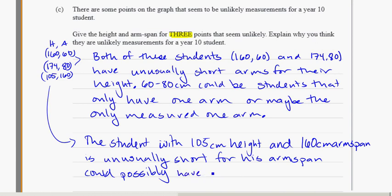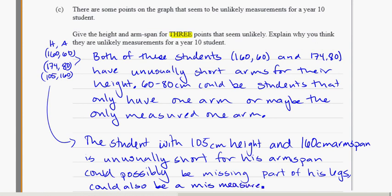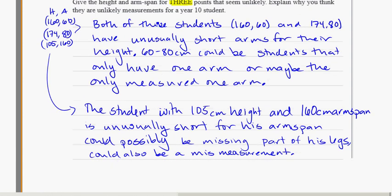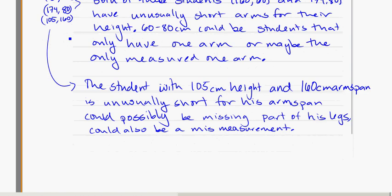Possibly be missing part of his legs, or maybe he's in a wheelchair and he can't actually stand up to measure his full height. Could also be a mis-measurement by the people who collected the data as well, so it could just be a mistake. Sometimes they ask you to justify a possible explanation for these outliers. One of these students with really short arms could also just be a short-armed person. These things can happen.